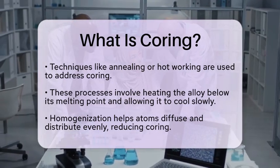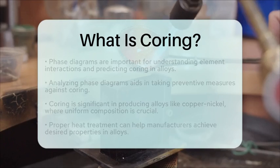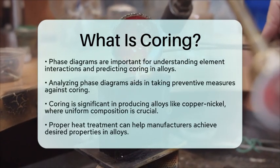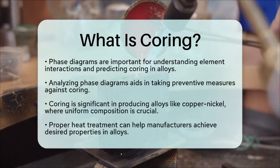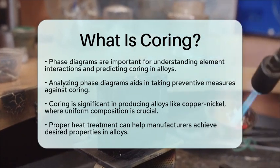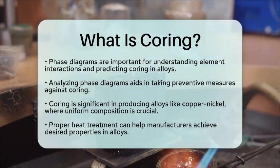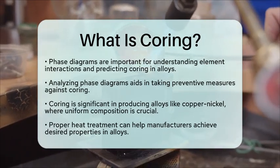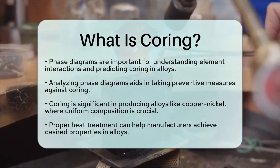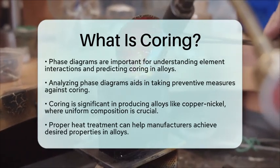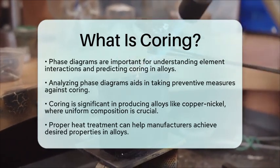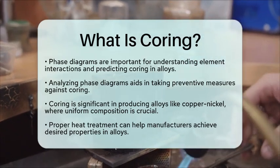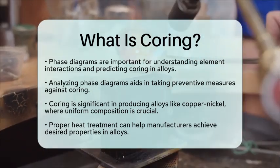Coring is particularly relevant in the production of various alloys, such as copper-nickel alloys, where maintaining a uniform composition is critical for achieving desired properties like corrosion resistance and strength. By managing coring through appropriate heat treatment processes, manufacturers can ensure their alloys meet the required specifications for different applications.